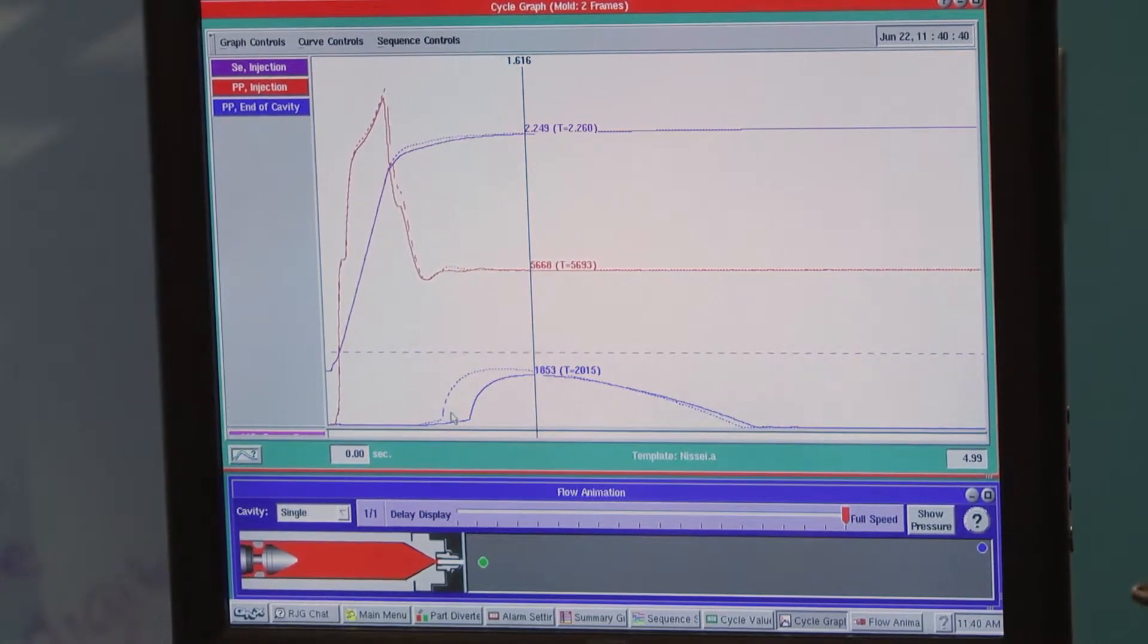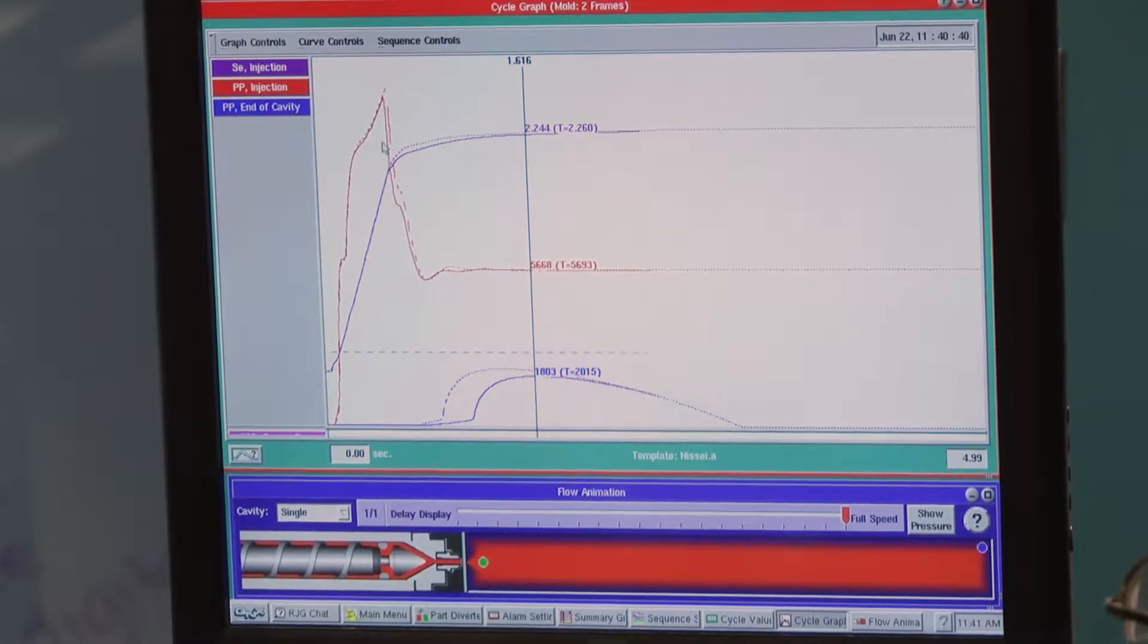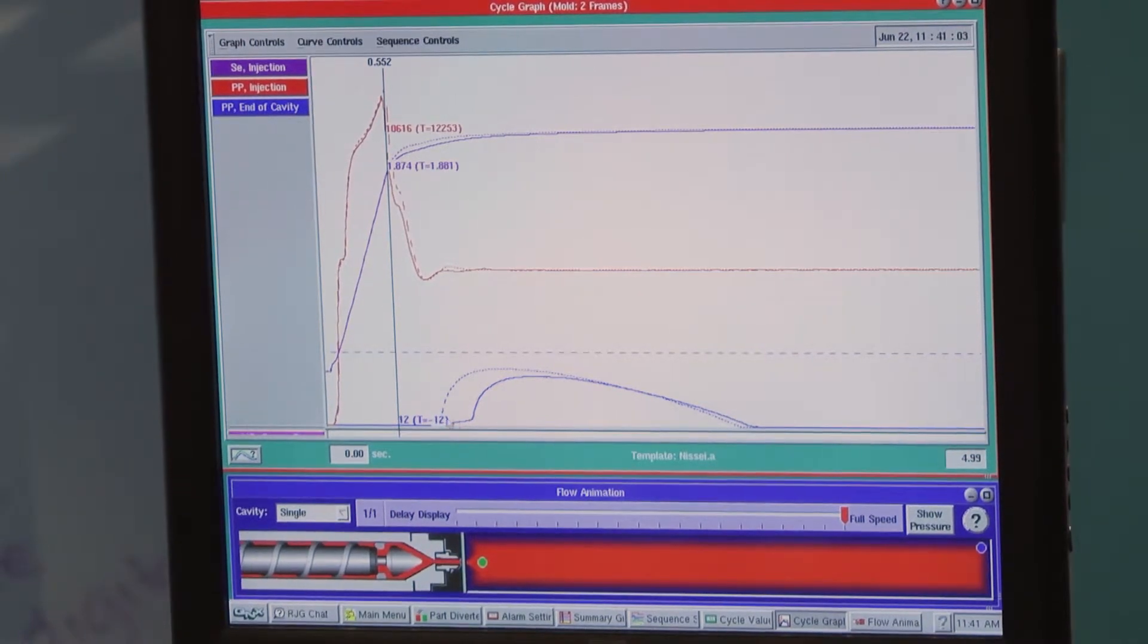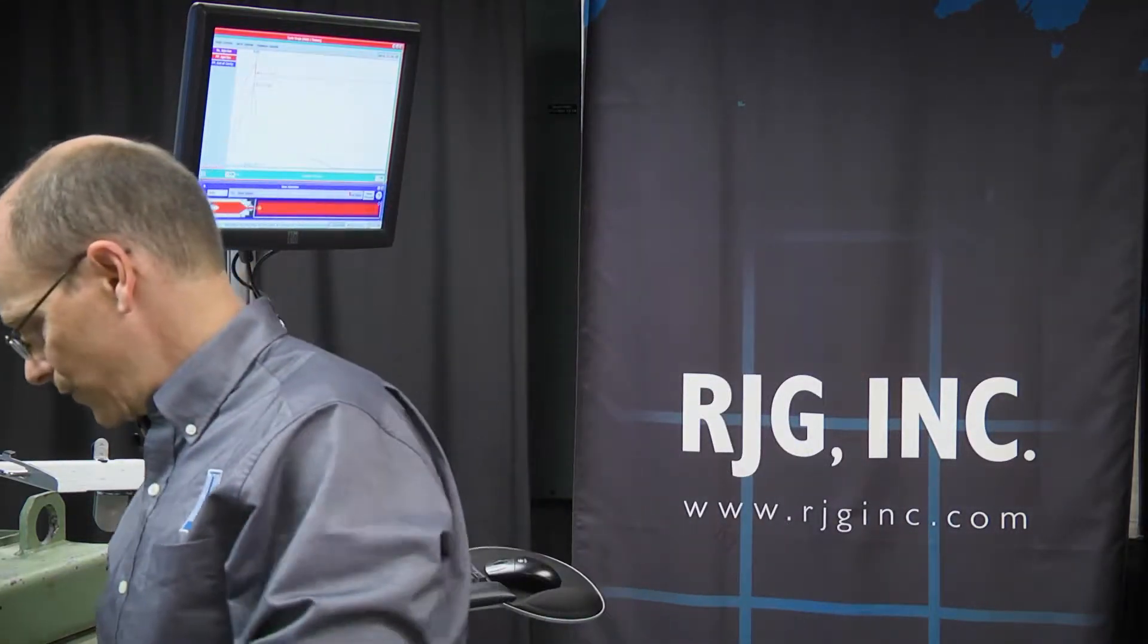Because we're matching our fill time, we know our fill speed is set right. It looks like our shot size or our transfer position is off. So let's adjust this back in now and see if we can match it. I'm going to try 61.5.